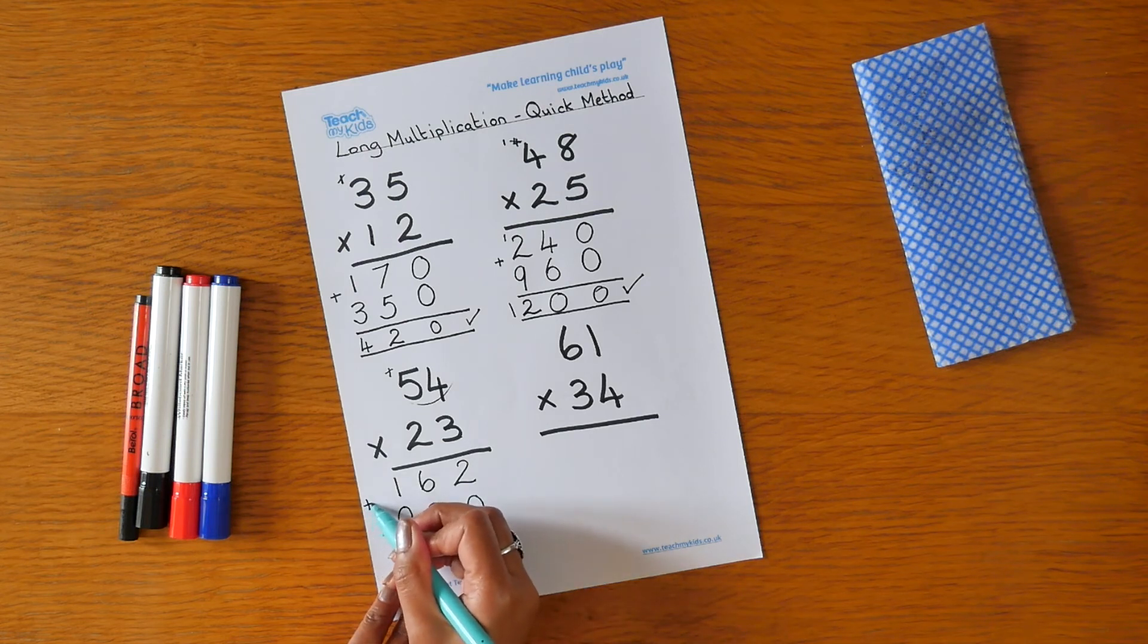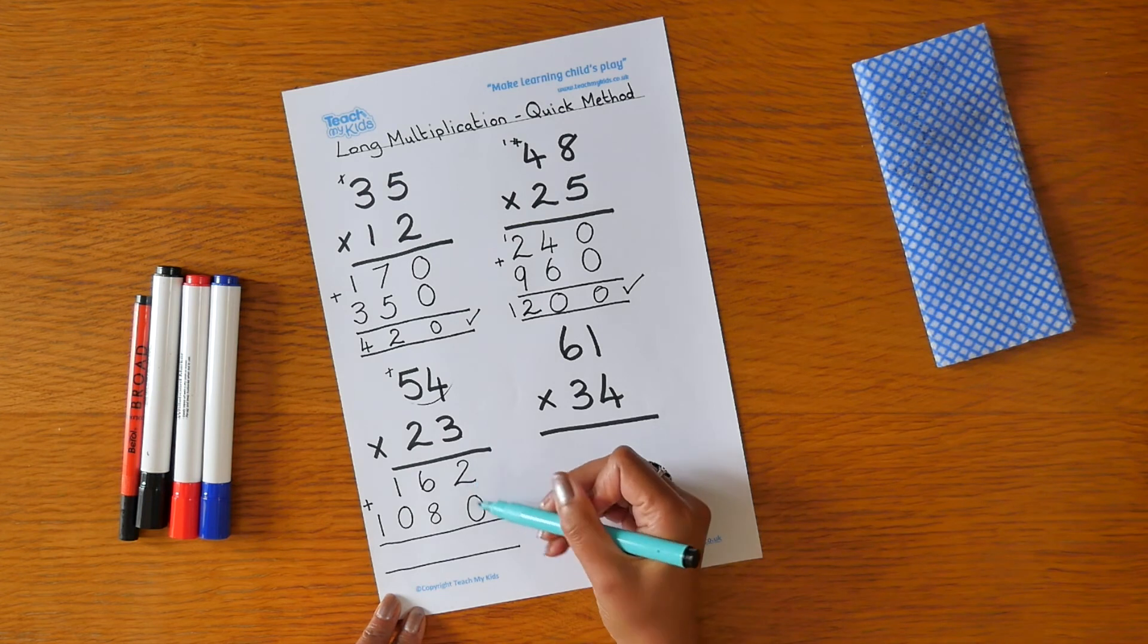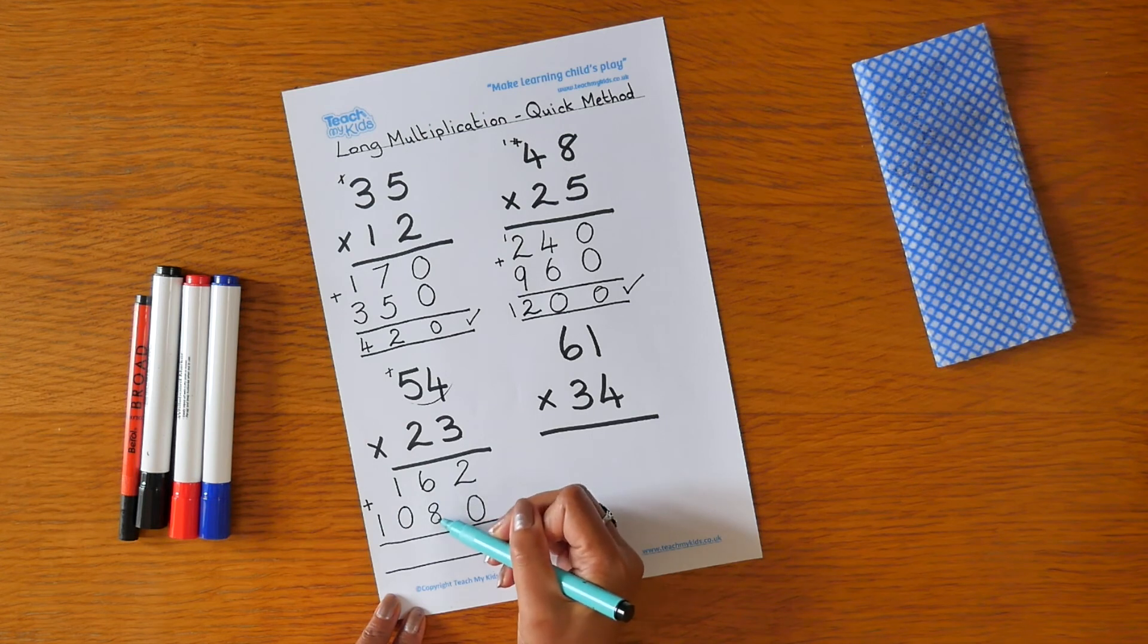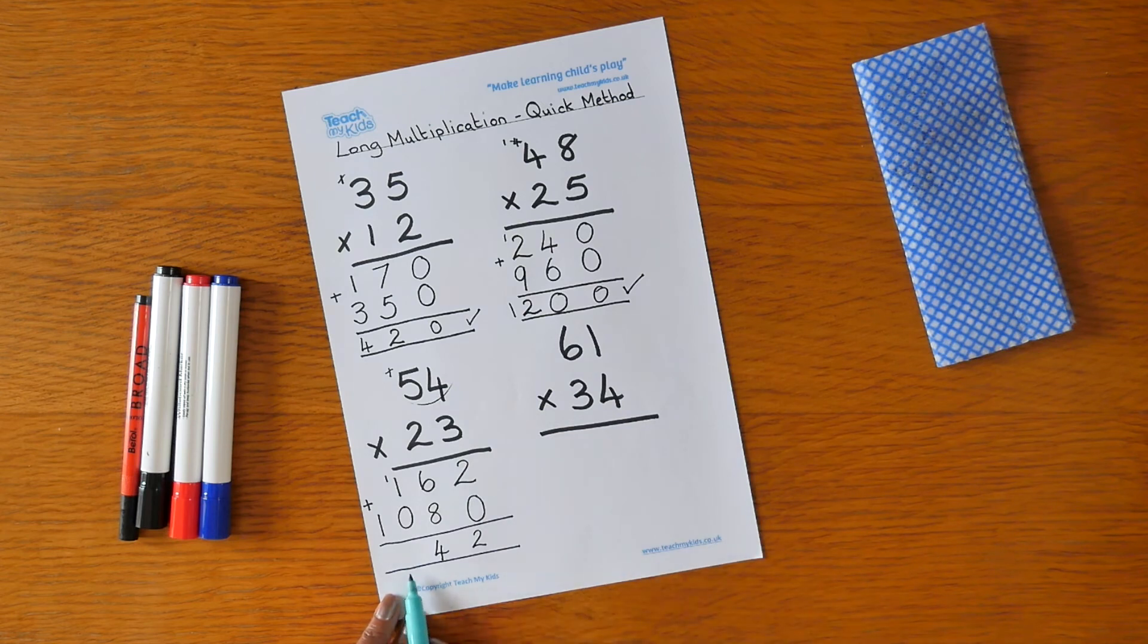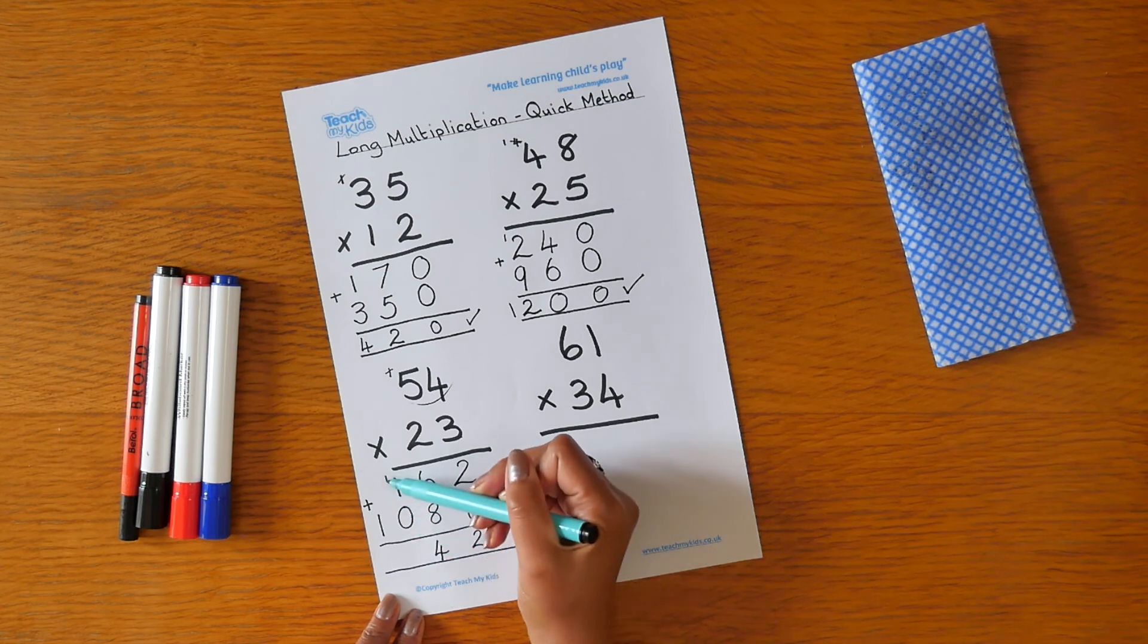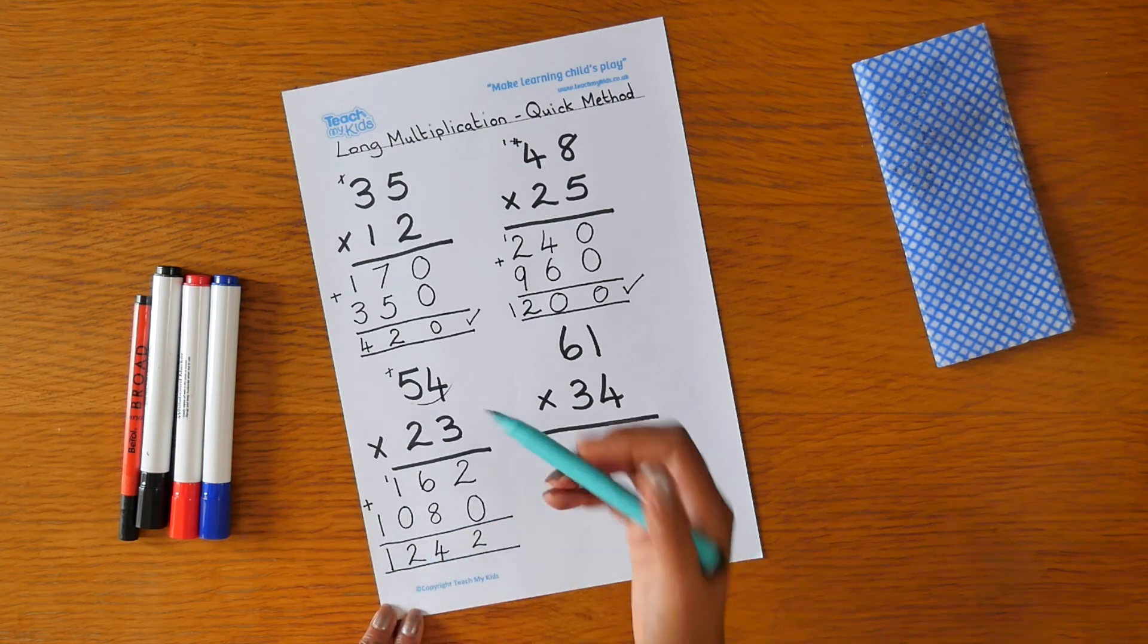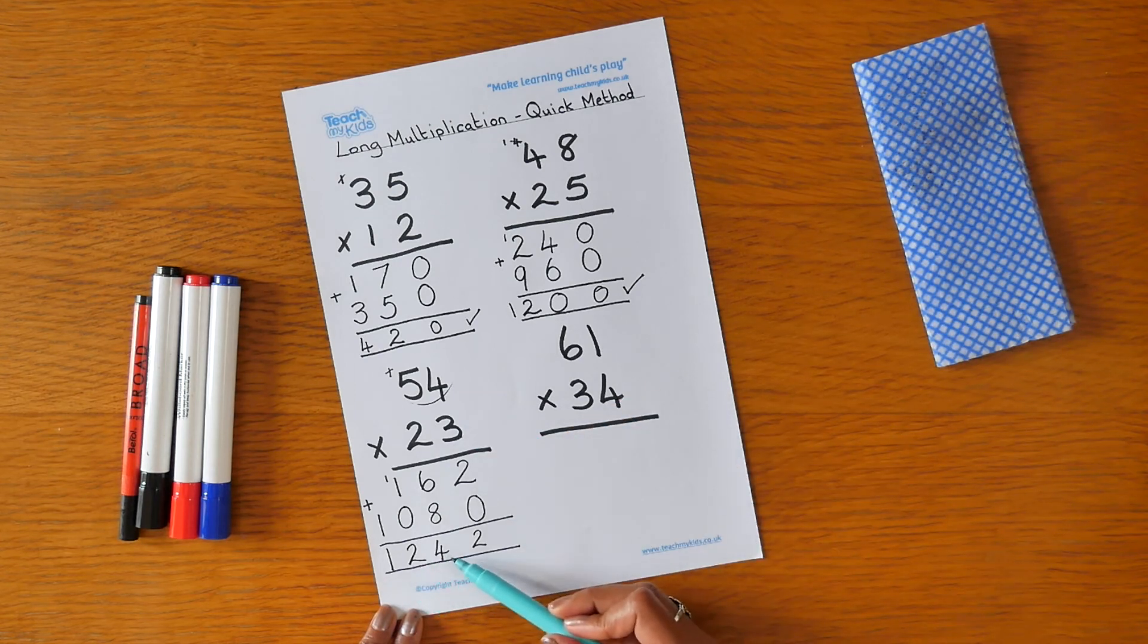We can now add our 2 answers together. 2 add 0 is 2. 6 add 8 is 14. We place our 4 here and we're going to carry the 1. You can place the 1 underneath here if you wish to. 1 add 0 is 1 plus the 1 that we carried is 2, and then we've got our 1 there. So the answer 54 times 23 equals 1,242.